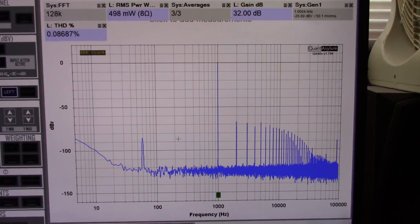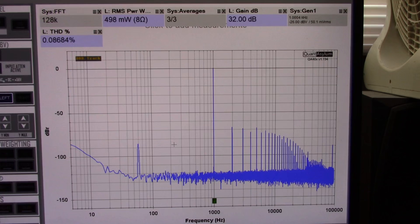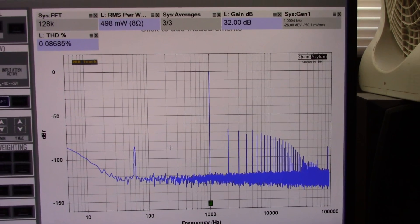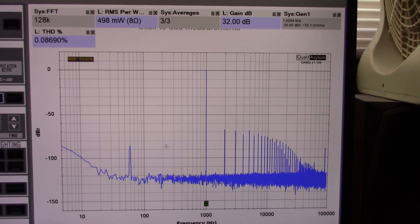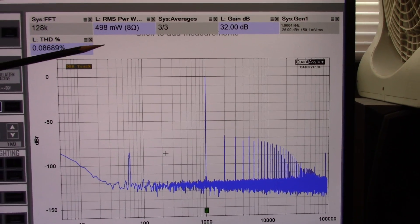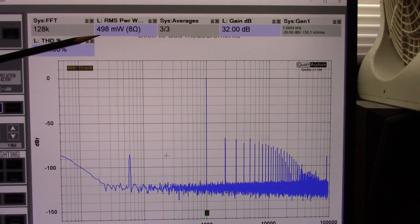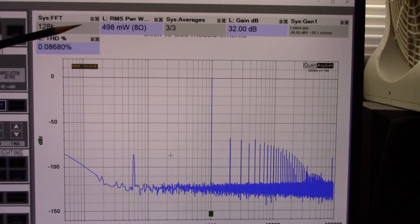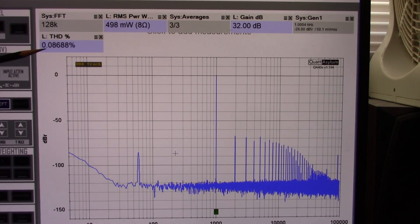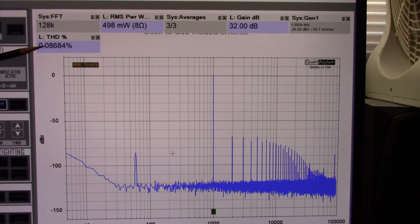Okay, my usual kickoff measurement at 1 kilohertz into an 8 ohm load. I'm running the amplifier at 9 volt supply right now. And because at such low supply voltages, the amplifier will be in clipping at 1 watt, which I would normally measure it, I'm going to back it down to about half a watt so it's not in clipping.